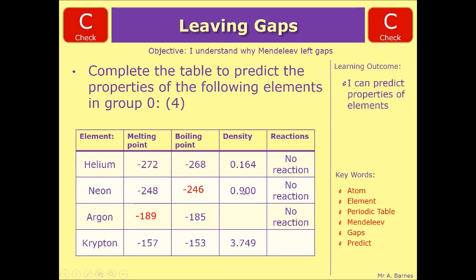Density, we've got 0.900 and 3.749, so you're looking around 1.8, and it's 1.784. And if these three don't react, if it's in the same group, chances are Krypton's not going to react as well.